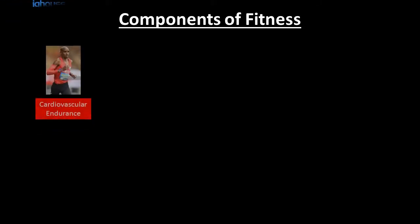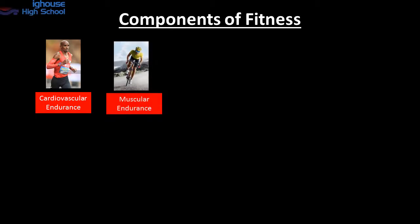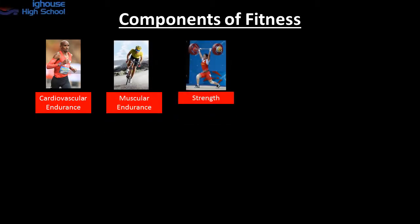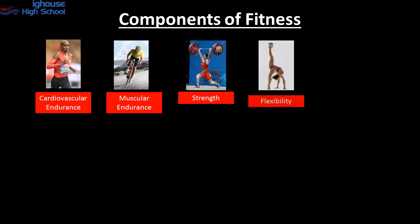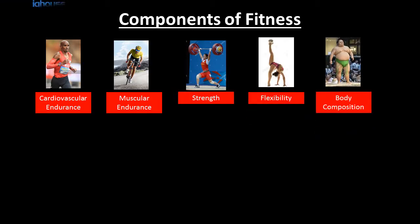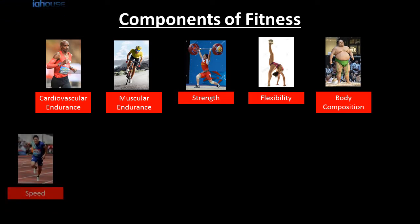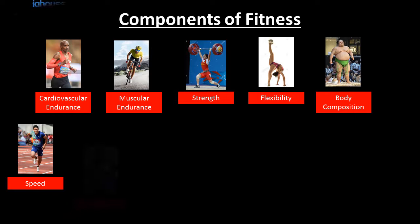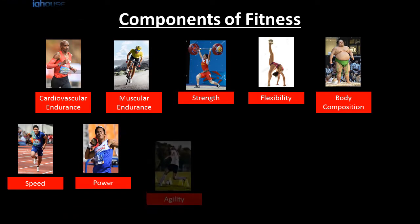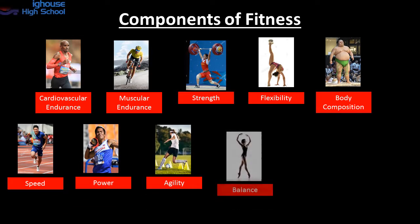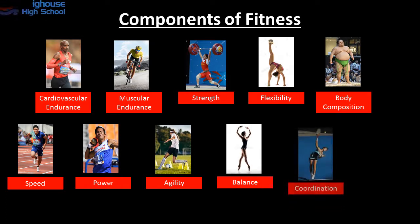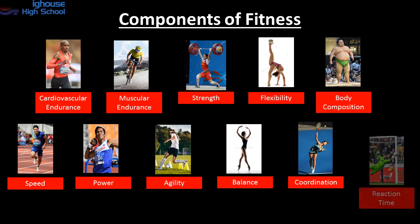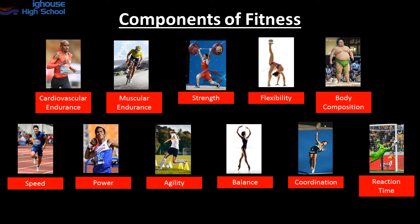Cardiovascular endurance would be best suited to a long distance runner. Muscular endurance would be best suited to the cyclist. Strength to weightlifting. Flexibility to the gymnast. Body composition — that was quite a difficult one — would be assigned to the sumo wrestler. Speed to the sprinter. Power to the shot put. Agility to the football player. Balance to the dancer. Coordination to the tennis player. And reaction time to the goalkeeper.